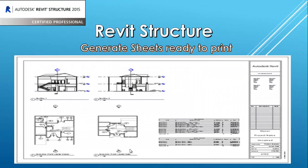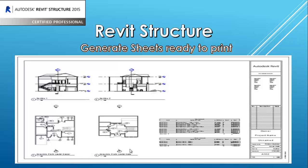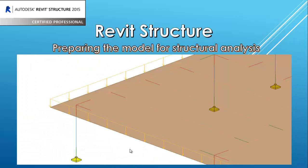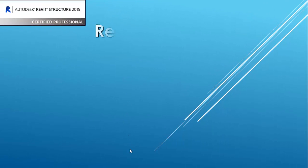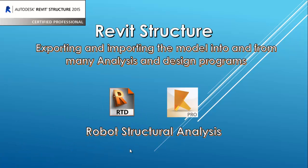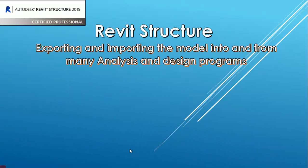Revit Structure also generates sheets ready to print, making it very easy to print your sheets. You can also prepare your model for structural analysis — put the loads, supports, all of it — as Revit understands each element as an analytical element. You will do 50% of your analytical work inside Revit Structure. You can export and import the model into and from many analysis and design programs, such as Robot Structural Analysis, SAP, ETABS, and others.